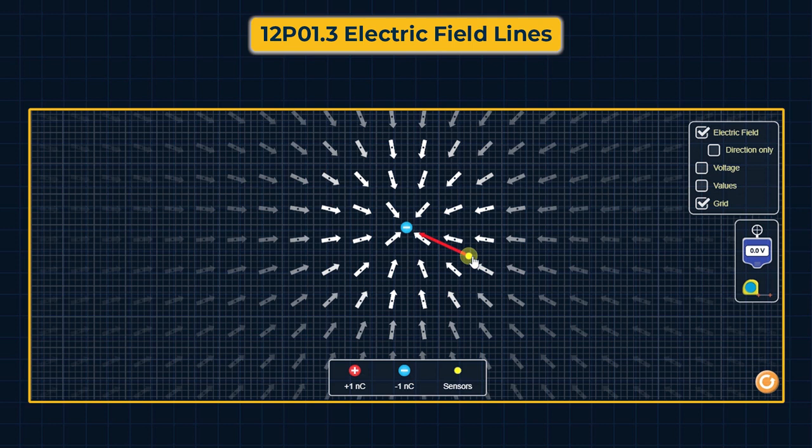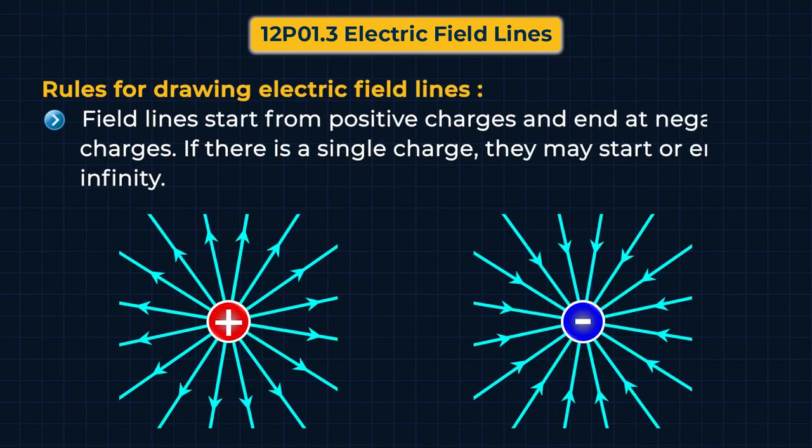यहाँ पर हम value भी find कर सकते हैं और देख सकते हैं कि इस charge से दूर जाने पर electric field की value decrease होती है। अभी हमने single positive charge और single negative charge के कारण electric field lines को draw करना सीखा। जब हम इन्हें paper पर draw करते हैं तो कुछ इस प्रकार से draw की जाती हैं।